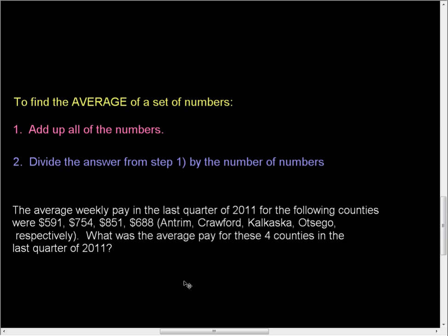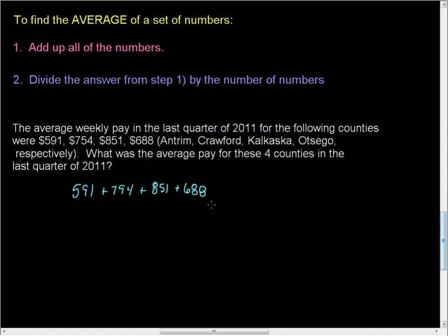We're looking for the average pay. Okay, so now these are averages, but we're going to find the average of the averages. To do that, we are going to go ahead and add up all the numbers. So we've got 591 plus 794 plus 851 plus 688. And when we're doing this, if you're using a calculator, of course, you can just plug it in. But since my classes are not,